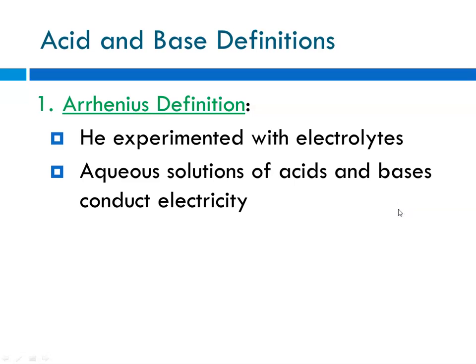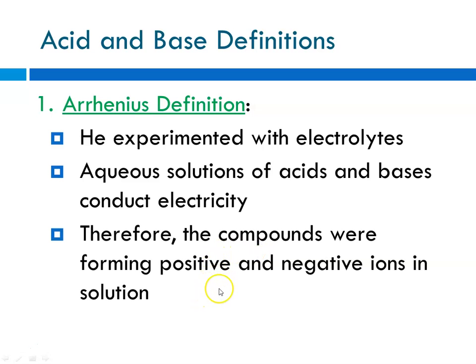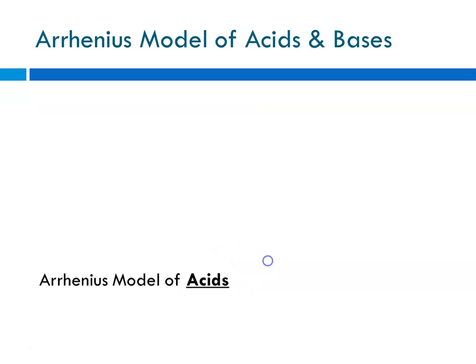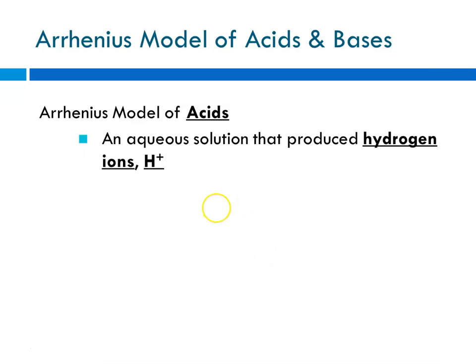Arrhenius did experiments with electrolytes and aqueous solutions, and he noticed that with acids and bases, their solutions conducted electricity, meaning that there were electrolytes present. Therefore, the compounds were forming positive-negative ions in the solution. He based his definition of acids and bases off of this concept that they were conducting electricity because ions were being released in water. According to the Arrhenius model, acids are compounds that release or produce hydrogen ions in the solution, H+ being the hydrogen ion. In the example, HCl, when it's a gas, if you bubble it through water, it produces an acidic solution. It releases H+ and Cl-.